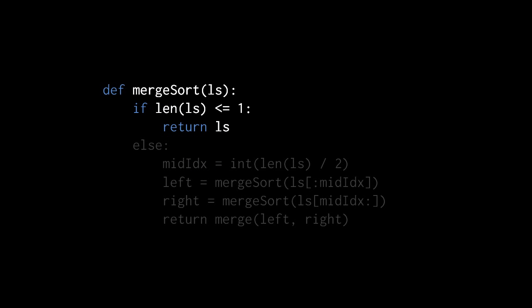Now that we have our merge function, we can write a function to do the actual merge sort. The function is quite simple, but perhaps a bit tricky to understand because it's recursive. In the base case — which in recursion refers to the case that terminates the chain of recursion, where no more recursive calls are made — if the length of the list is less than or equal to one, then merge sort simply returns the list itself. This makes sense because a list of zero or one items is always sorted.